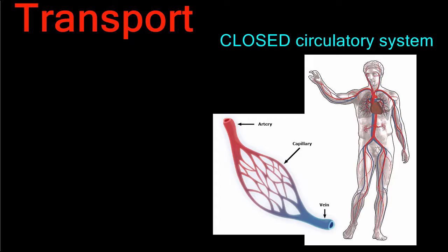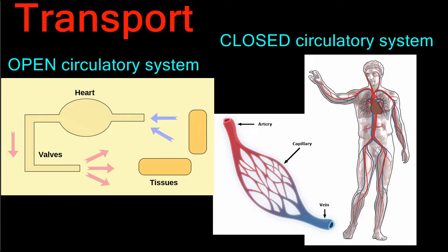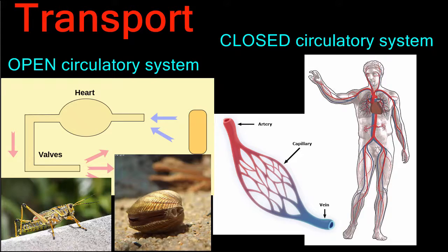Humans are not the only organism that complete the activity of transport, however. Many other animals also have a closed circulatory system. Still other animals have an open circulatory system, where the blood bathes the tissues and organs directly rather than remaining inside vessels. Examples of organisms with open circulatory systems are insects and molluscs.